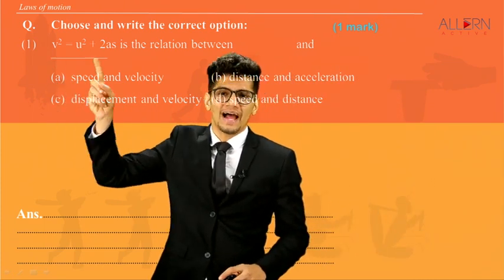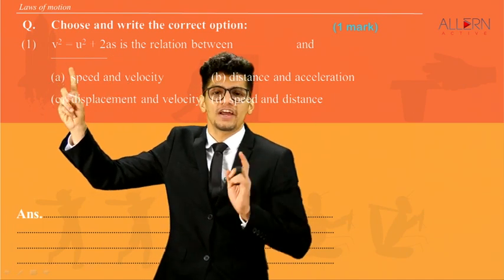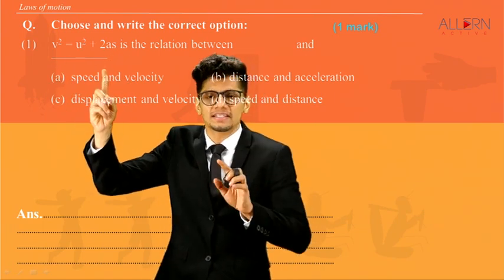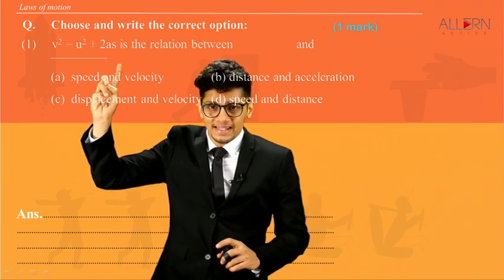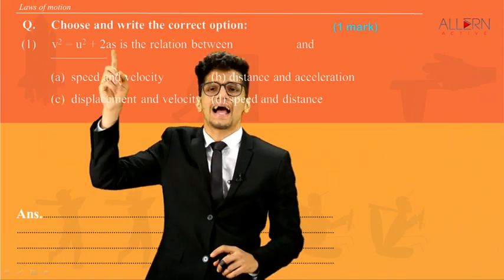First letter is V and the last letter is S. V means velocity, S means either distance or displacement. That means this gives us the relation between velocity and displacement.